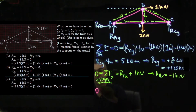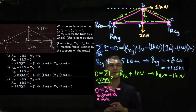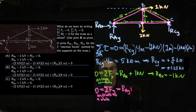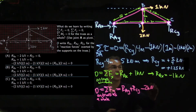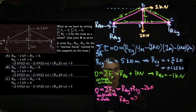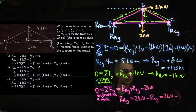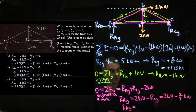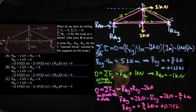Sum of forces in Y direction on the truss as a whole, doing up minus down: R-A-Y plus R-C-Y minus two kilonewtons equals zero. We already know R-C-Y, so solving for R-A-Y: R-A-Y equals two kilonewtons minus 5/4 kilonewtons, which gives three-quarters of a kilonewton — 0.75 kilonewtons.